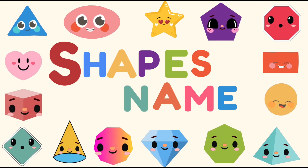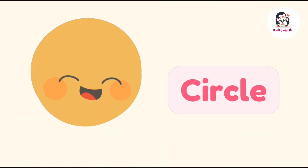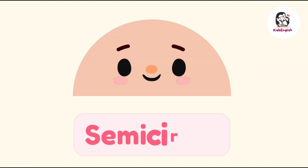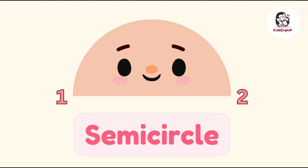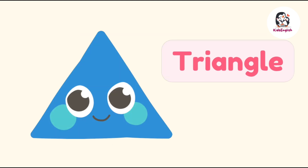Hello kids, today we are going to learn about shapes. Circle — this is a circle, circle is a round shape. Semicircle — semicircle has two sides, one, two. Oval — this is an oval. Triangle — triangle has three sides, one, two, three.